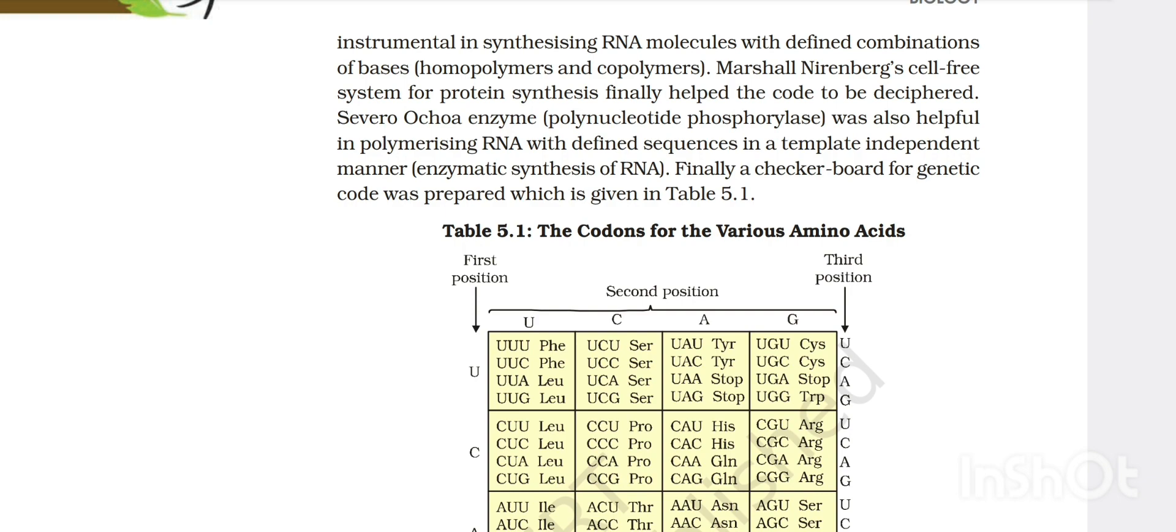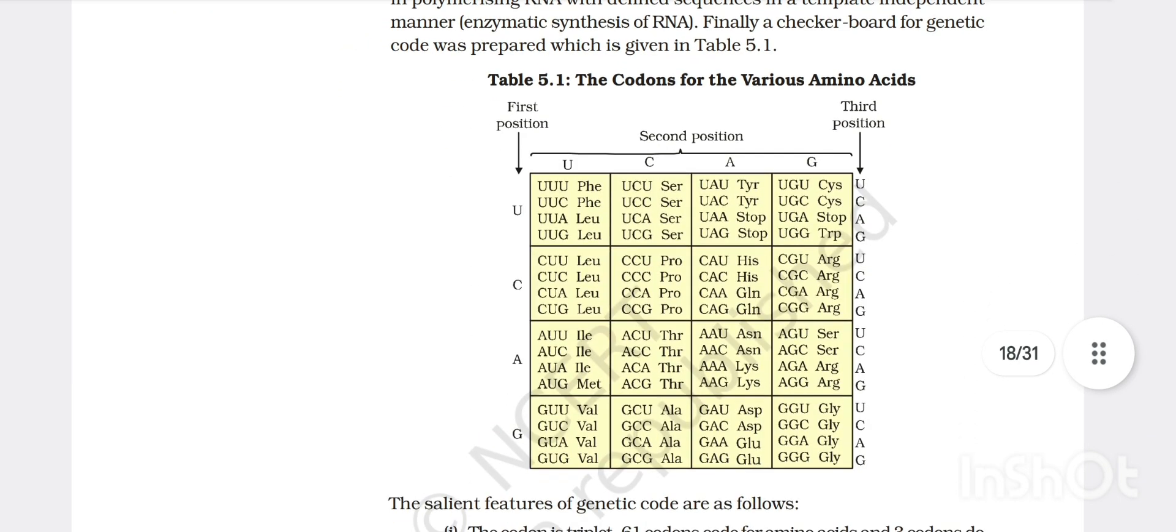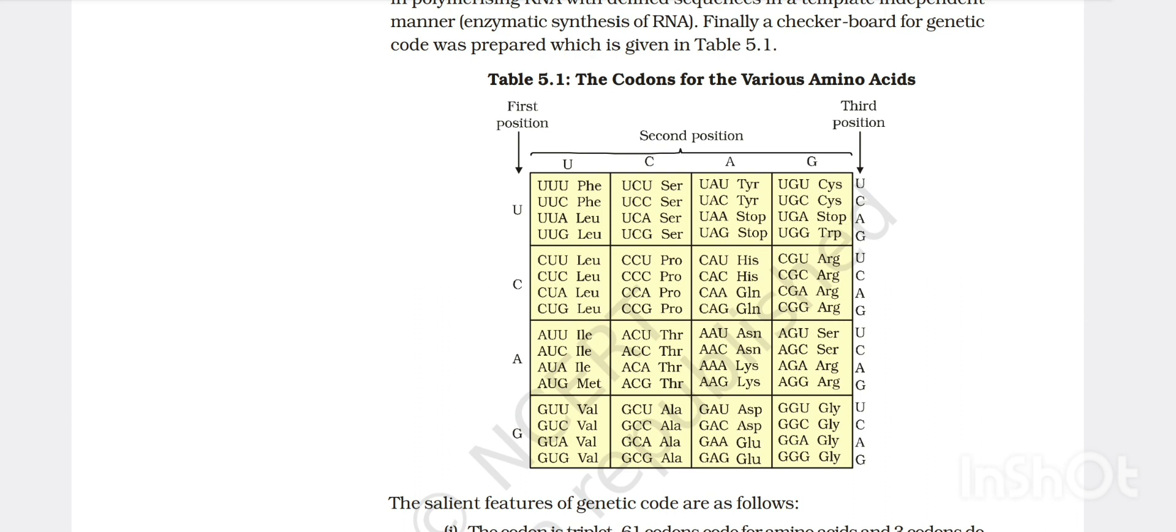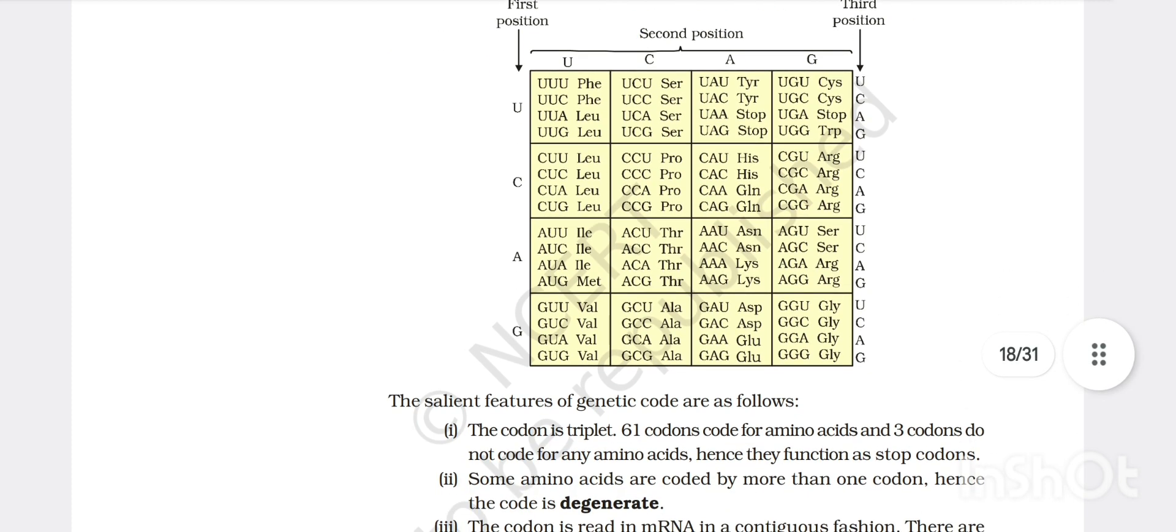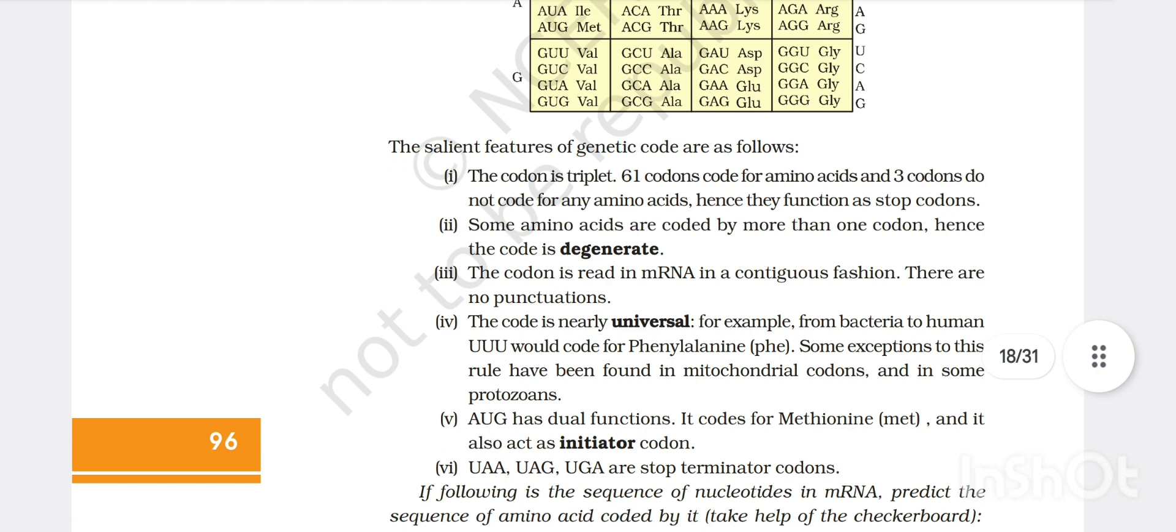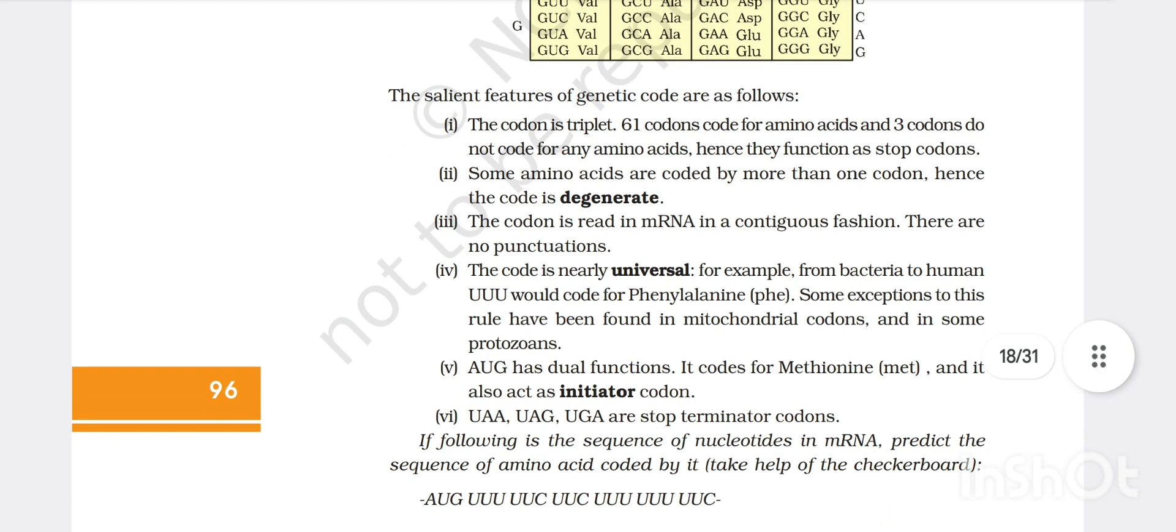Finally, a checkerboard for genetic code was prepared which is given in table 5.1. It is the overall codons for various amino acids - phenylalanine, serine, tyrosine, cysteine. These are the genetic code or possible combinations. There are total 64 codons. Then salient features of genetic code. First of all, it is triplet. There is no comma, that means comma-less. Some amino acids are coded by more than one codon, hence the code is degenerate. It is comma-less, so codon is read in mRNA in a contiguous fashion. There are no punctuations. Code is nearly universal from bacteria to human. AUG has dual function - it codes for methionine and acts as initiation codon. UAA, UAG and UGA are stop or termination codons.